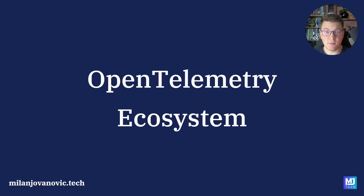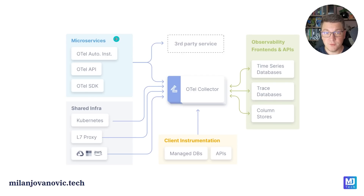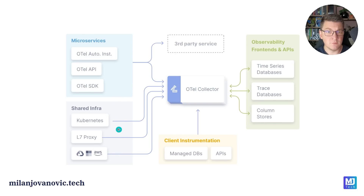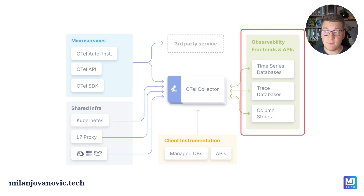The OpenTelemetry ecosystem contains many components, each with their respective role, and they all come together to give you observability into your system. At a high level, we have our microservices generating telemetry data, which is fed to an OpenTelemetry collector. This central component takes in telemetry data produced by your systems as well as any infrastructure components, and makes this data available to observability frontends that you can use to monitor your system. Setting up your application to produce telemetry data is relatively straightforward because all of that is abstracted away, especially in .NET.